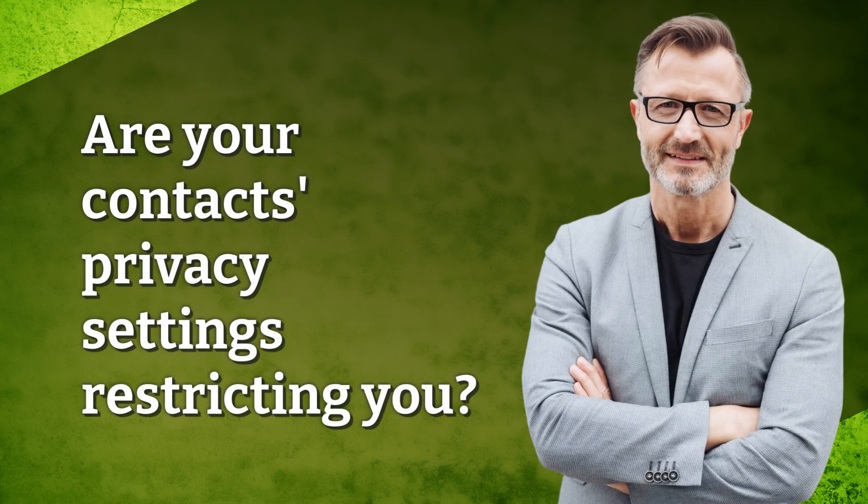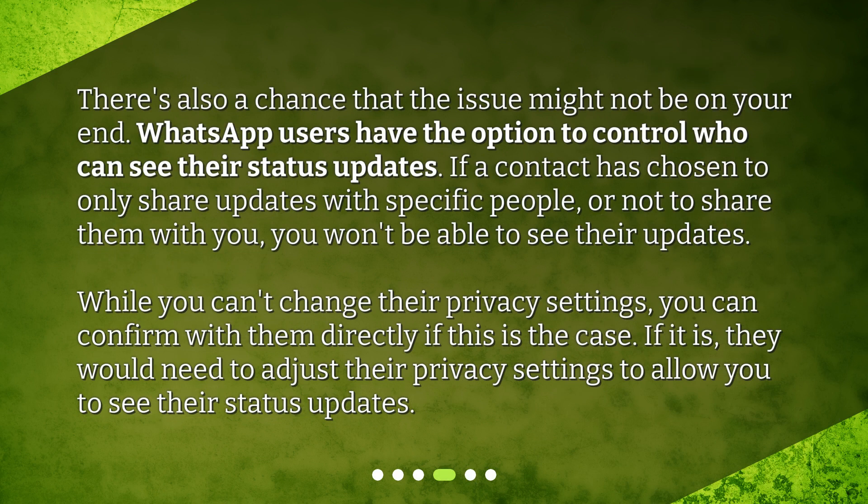There's also a chance that the issue might not be on your end. WhatsApp users have the option to control who can see their status updates. If a contact has chosen to only share updates with specific people, or not to share them with you, you won't be able to see their updates. While you can't change their privacy settings, you can confirm with them directly if this is the case. If it is, they would need to adjust their privacy settings to allow you to see their status updates.